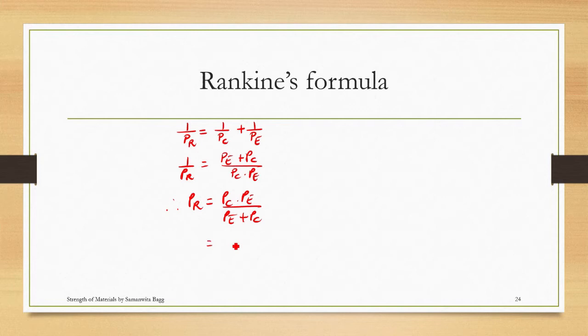Now let's take this PE from here to the denominator, so this becomes PC upon PE plus PC upon PE. So this will be PC upon—this term becomes 1 plus—we are just segregating the term. So this is the formula for PR. Now I am going to individually substitute the formula for PC and PE.